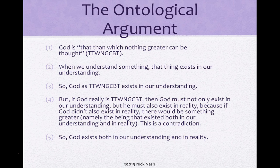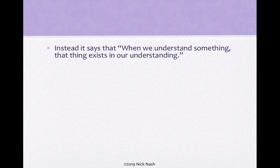So let's go through the first three premises of the argument slowly. One: God is that than which nothing greater can be thought. Two: when we understand something, that thing exists in our understanding — and so since we understand that God is that than which nothing greater can be thought, this thing exists in our understanding. Notice that instead of saying that anything that exists in our understanding exists in reality, the third premise is saying that when we understand something, that thing exists in our understanding.